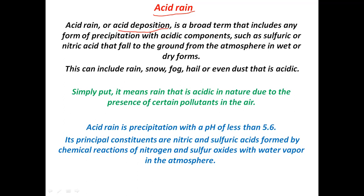Acid deposition is a broad term that includes any form of precipitation with acidic components, such as sulphuric acid and nitric acid, that fall to the ground from the atmosphere in either wet or dry forms. This includes rain, snow, fog, or even dust that is acidic.